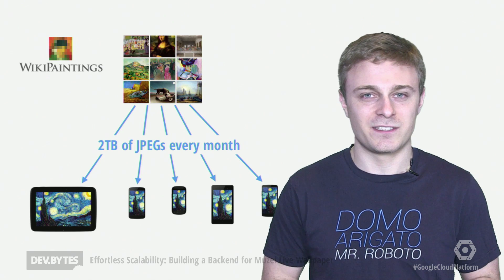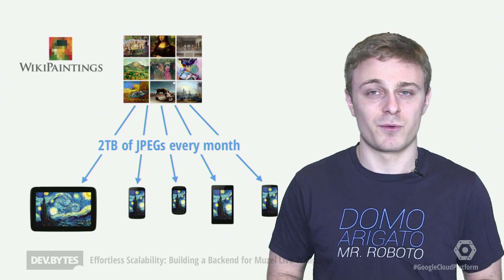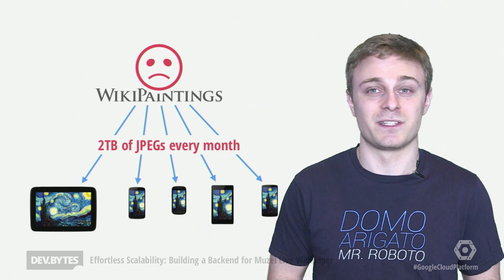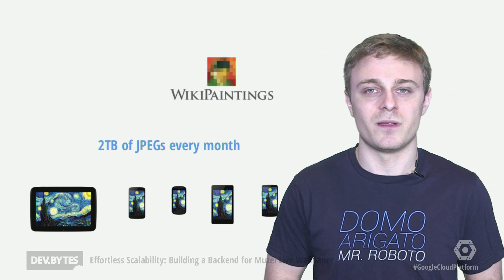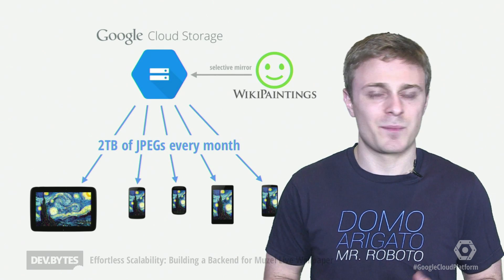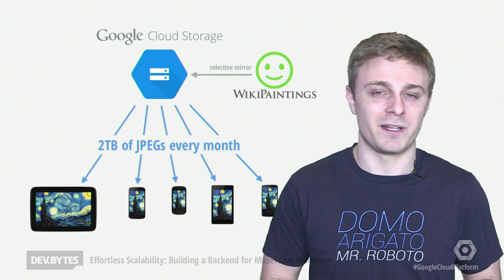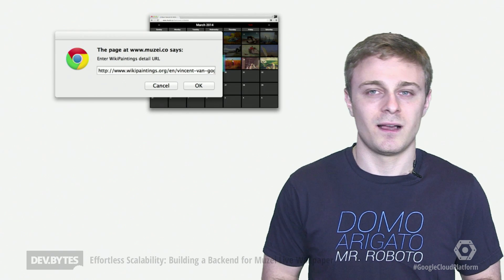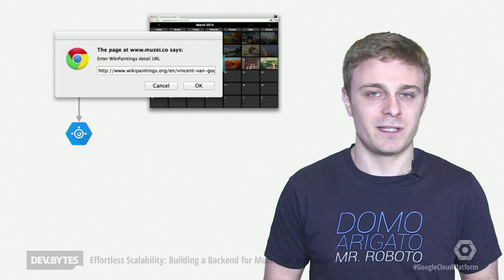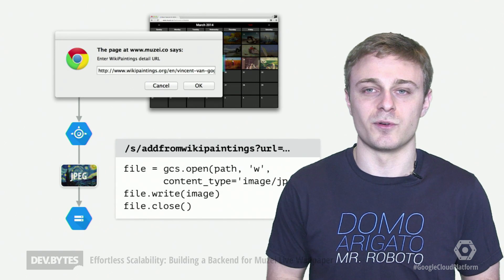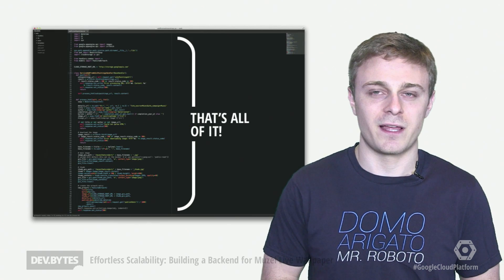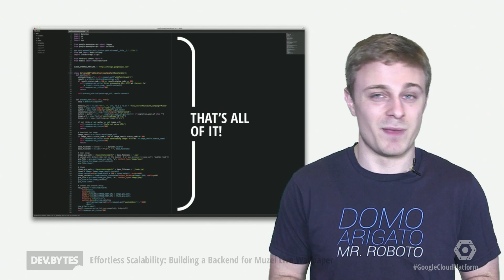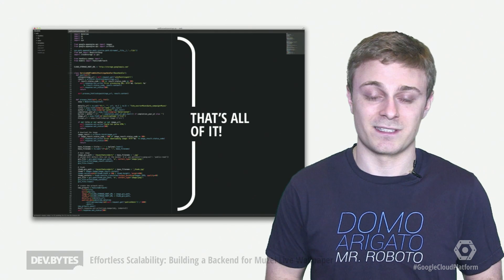There's one last thing. I'm serving 2 terabytes of images per month, where most of the artwork comes from the wonderful wikipaintings.org project. Now I really want to be a good citizen of the web and avoid melting their servers, so I grab the images I need and mirror them to Google Cloud Storage. This way my app can scale to millions of users, and the fine folks at wikipaintings.org don't have to carry the burden. The best thing is this is fully integrated into my CMS. I simply give it a wikipaintings link, and it reads the page metadata, creates a thumbnail, and stores the images in Google Cloud Storage. All the server-side code for that fits in a single screenful on my 30-inch monitor. Coming from a UI guy who doesn't really like dealing with messy things like servers and backends, the whole thing is kind of beautiful.